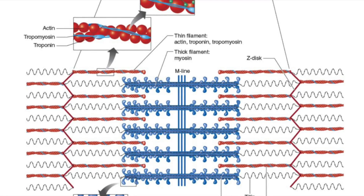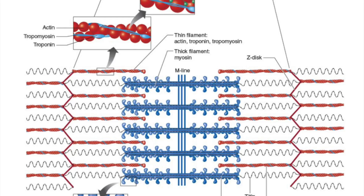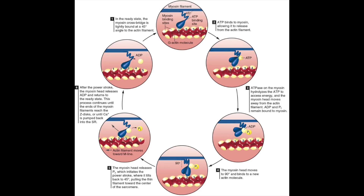For myosin to pull on actin — called the power stroke — we need ATP. As actin and myosin bind, the myosin is at a 90-degree angle, cocked back like a pitcher ready to throw. ATPase breaks down ATP into ADP and inorganic phosphate (Pi). The Pi is released, which causes the power stroke. After the power stroke, the ADP leaves, another ATP binds, and myosin attaches to another actin site for another power stroke. That is everything you need to know regarding skeletal muscle contraction.